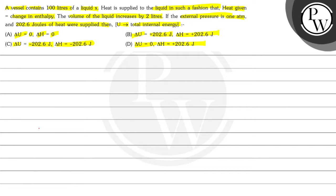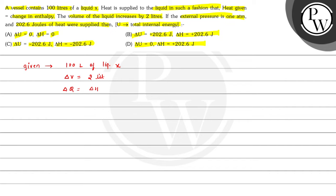Now we have to find out the values of ΔH and ΔU. Firstly we will write what is given: 100 liters of liquid X, the volume of the liquid increases by 2 liters, so ΔV = 2 liters. It is also given that heat given equals change in enthalpy, so we can write Q = ΔH, where Q is heat given and ΔH is change in enthalpy.